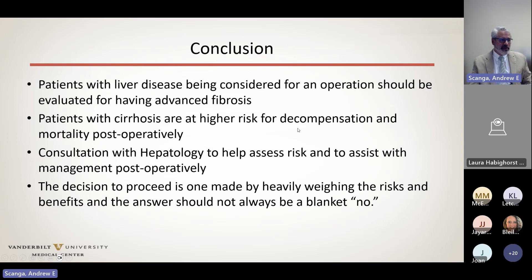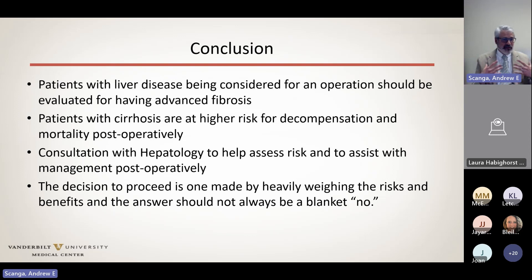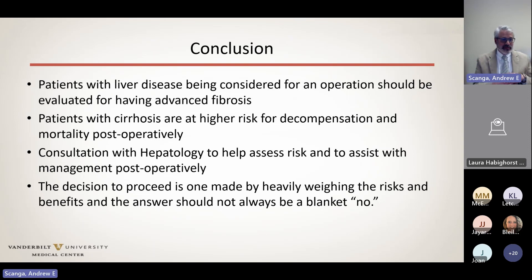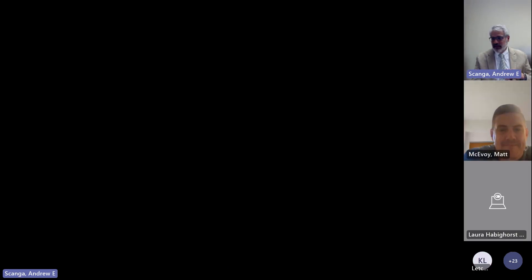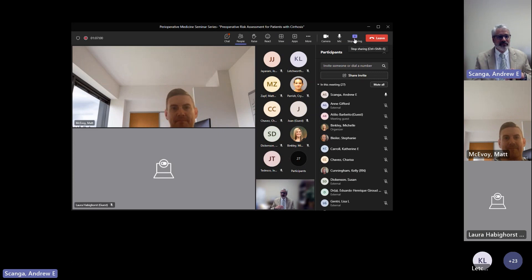In conclusion, patients with liver disease being considered for an operation should be evaluated for advanced fibrosis. Patients with cirrhosis are at higher risk for decompensation and mortality postoperatively. Generally, if you have somebody with advanced liver disease, you should probably consult hepatology to help assess risk and assist with postoperative management. The decision to proceed must be made by heavily weighing risks and benefits, and the answer should not always be a blanket no — in some situations, the right answer is to proceed.